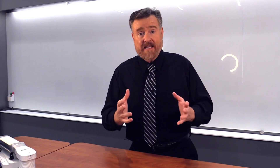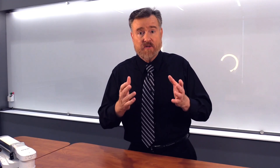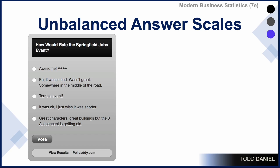Here are some other examples of an unbalanced answer scale. In this example, notice that there is no underlying order to the answer scale — it runs from awesome to wasn't bad to terrible to it was okay. And what is the difference between it was okay and it wasn't bad? So we have an ambiguity there. You should structure your answer scale so that it runs from high to low, and those answers should be arranged in that order.